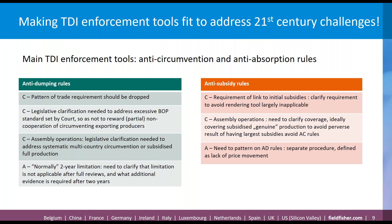The second enforcement tool is anti-circumvention. There are some straightforward circumventions the Commission has addressed in its ex officio investigations. But the more complicated one is assembly circumvention. For example, the EU imposed anti-dumping duties on exports of Chinese bicycles. As a circumvention tool, the Chinese industry ships bicycle parts to Malaysia, assembles them there, and then ships the assembled bicycles from Malaysia to the EU. To the extent that these assembly operations are relatively straightforward and don't add added value, this is a circumvention activity — but it takes a lot of information and evidence to prove it.